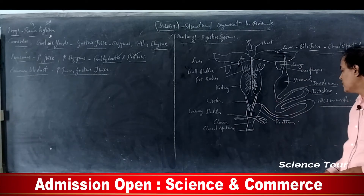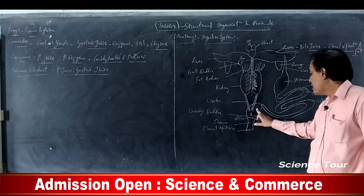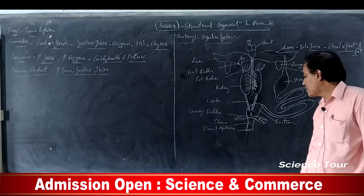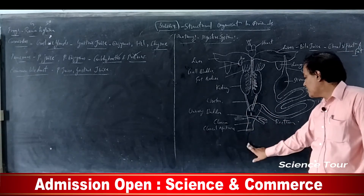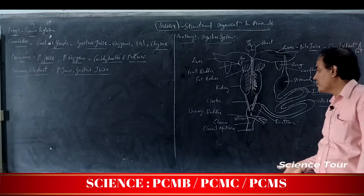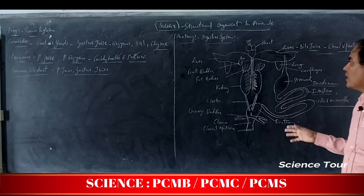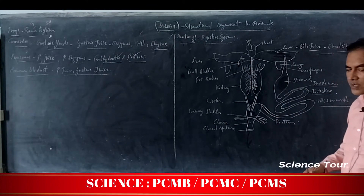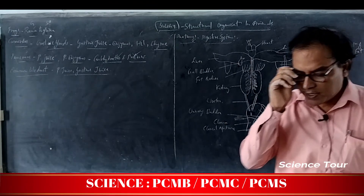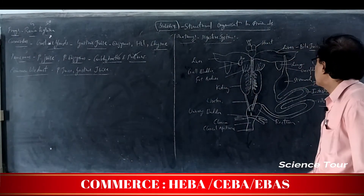Undigested food particles move to the rectum, then to the cloaca, and through the cloacal aperture they are eliminated out of the body. This completes the digestive system of the frog — mark it as a very important 5-mark question.